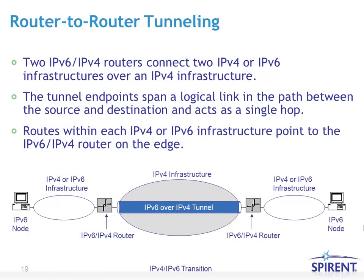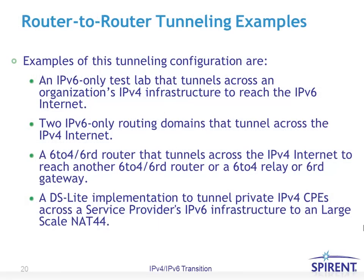Router-to-router tunneling is when two IPv6 nodes connected to IPv6 links need to connect over an IPv4 infrastructure, so the two routers in between establish a tunnel. Examples include automatic tunnels such as 6to4 and 6RD when tunneling IPv6 packets across an IPv4 internet, or the reverse — sending IPv4 packets across a service provider's IPv6 infrastructure — where we might use DS Lite.